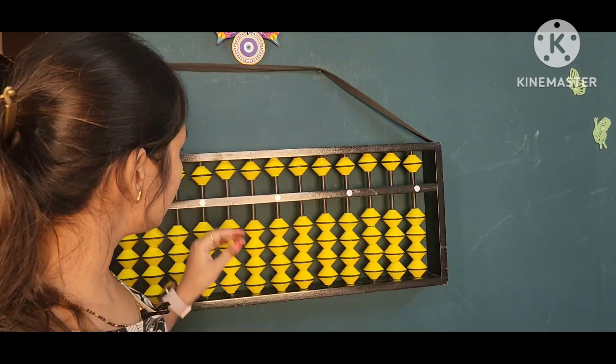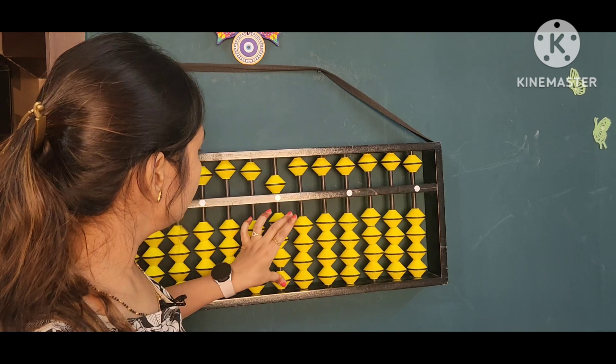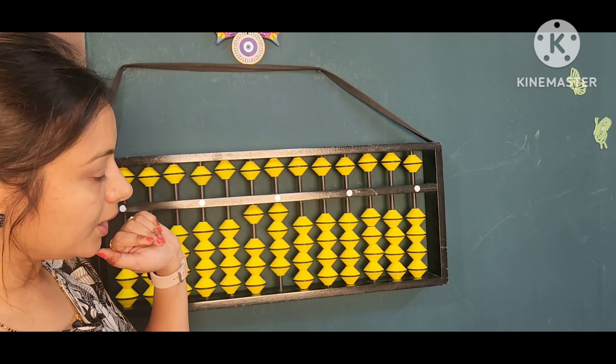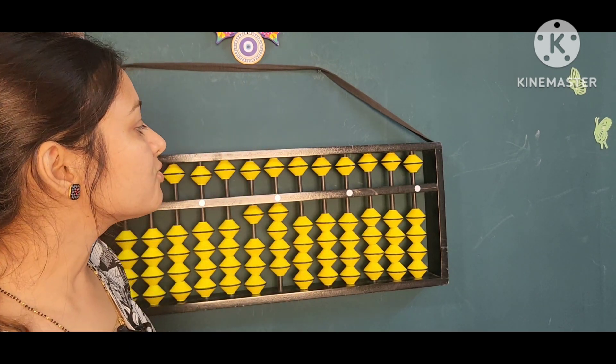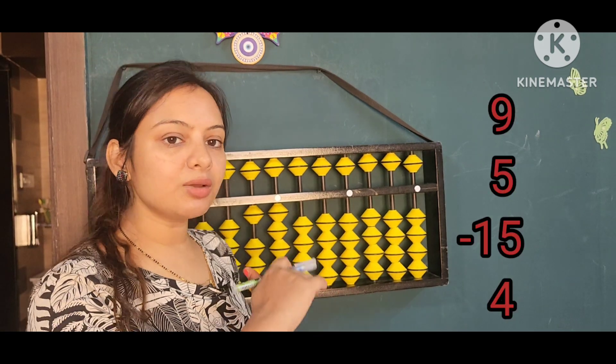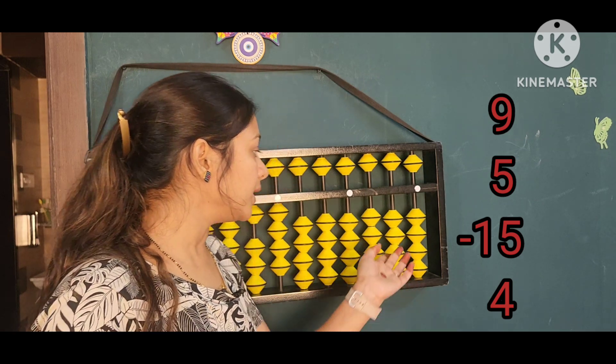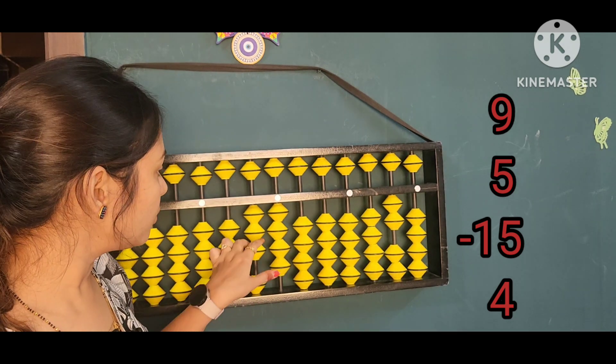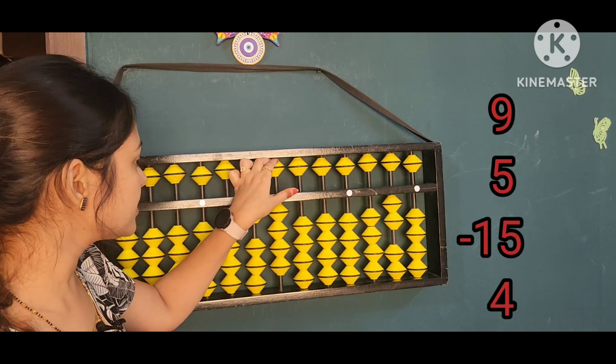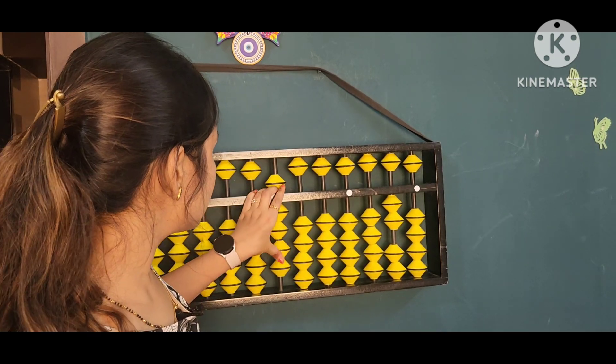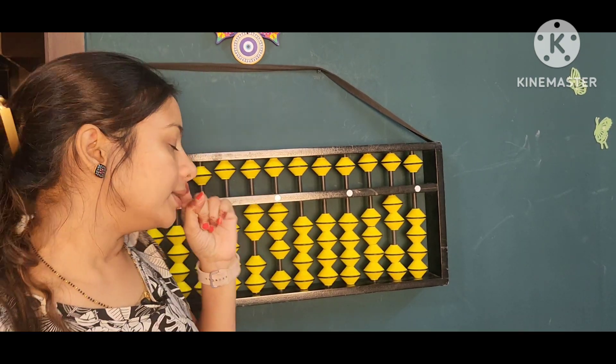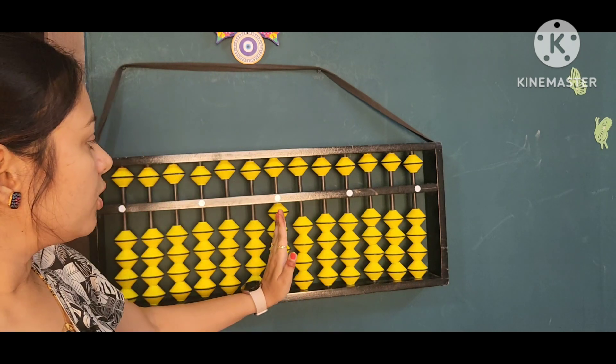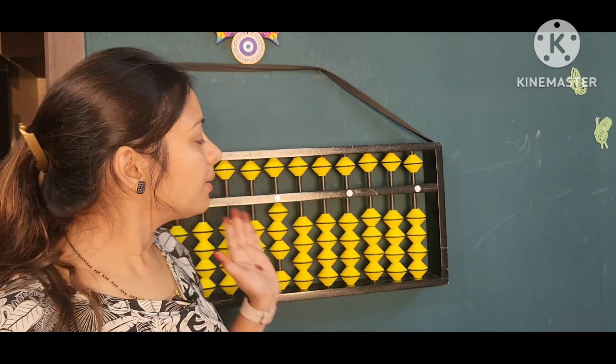Suppose we'll take nine now five now less fifteen. Abhi less fifteen me nahi karpayenge because humare paas fourteen hi hai. To less fifteen ke liye uska near ten number is twenty. To humane twenty borrow karenge this time. We got twenty, now we can do less fifteen, less ten itself and then less five less ten add five, now four less six six add ten. Twenty humane borrow kia to twenty return karenge. So we got answer three, it means it is a positive number.